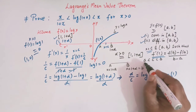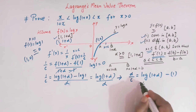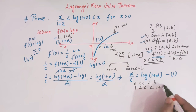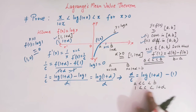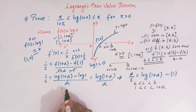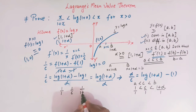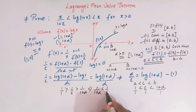Now let us apply this inequality. We have the point c lying between a and b, that is, 1 < c < 1+alpha. Taking the reciprocal of all three terms — and since taking reciprocals reverses the direction of the inequality — we get: 1/(1+alpha) < 1/c < 1.